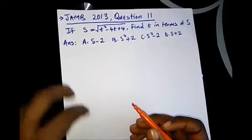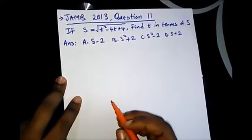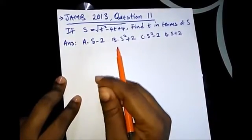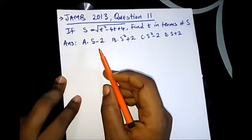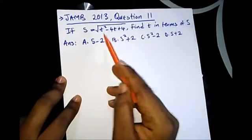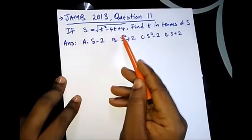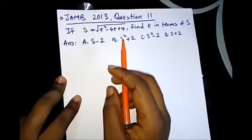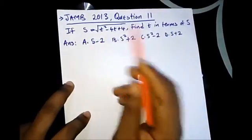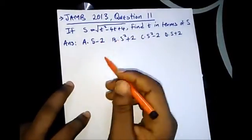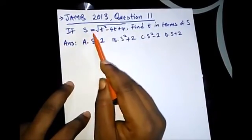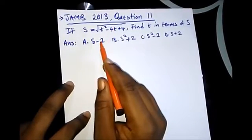Hello viewers, welcome to Destined to Win Tutorials. Today we're going to be treating questions on JAMB on the topic change of subject of the formula. This question is from JAMB 2013 question 11. It says: if s is equal to the square root of 4t² - 4t + 4, find t in terms of s. We are finding t in terms of s, so it's making t the subject of the formula. We have to remove this square root.